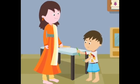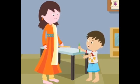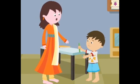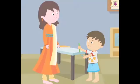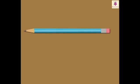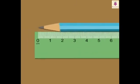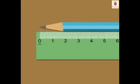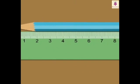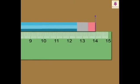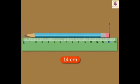Mom, can I measure the length of this pencil with this ruler? Yes, of course. Let me show you how. Keep the pencil on the table and keep the ruler beside it. You have to take care that one end of the pencil coincides with the zero mark of the ruler. Now look at the other end of the pencil. Can you tell me which number it coincides with on the ruler? 14. So its length is 14 centimetres.